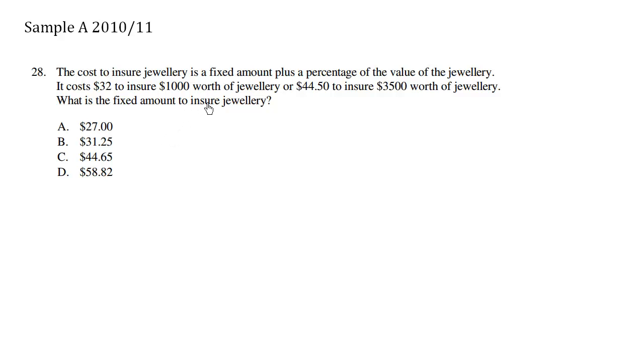The cost to insure jewelry is a fixed amount plus a percentage of the value of the jewelry. It costs $32 to insure $1,000 worth of jewelry or $44.50 to insure $3,500 worth of jewelry. What is the fixed amount to insure jewelry?